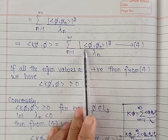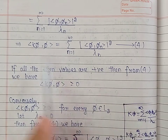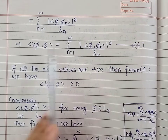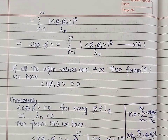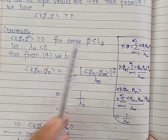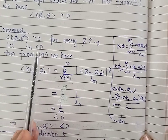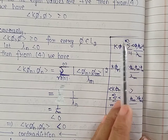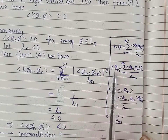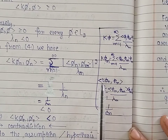We have obtained the inner product of K*phi with phi as a summation where n varies from 1 to infinity of the square of the modulus of the inner product of phi with phi_n, divided by lambda_n. If all eigenvalues are positive, then the right-hand side is non-negative, so the inner product of K*phi with phi is greater than or equal to 0. This proves the first part. Conversely, suppose the inner product of K*phi with phi is greater than or equal to 0 for every square integrable function phi. If any eigenvalue lambda_n is negative, we use K*phi expressed as summation where m varies from 1 to infinity of the inner product of phi with phi_m times phi_m divided by lambda_m, and replace phi by phi_n.